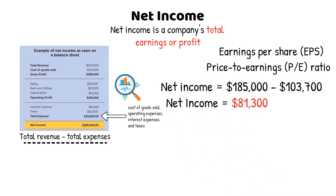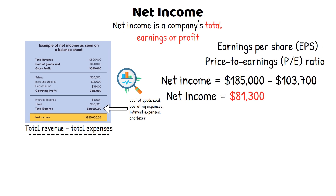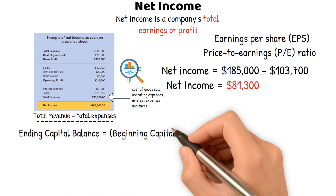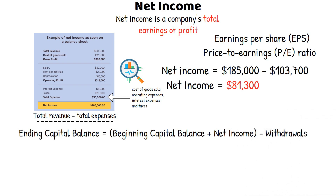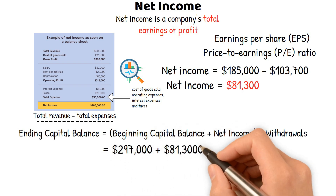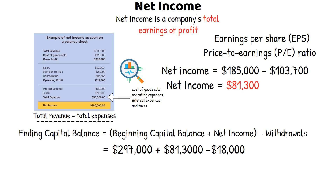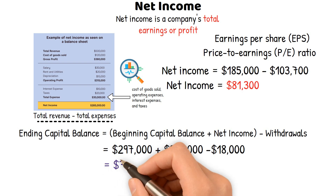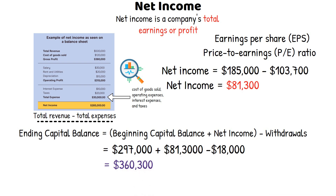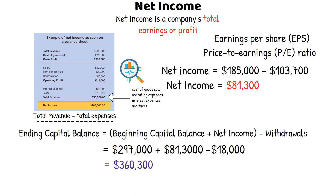Next, we need to calculate the owner's ending capital balance after taking into account the net income and any withdrawals. The formula is: ending capital balance equals beginning capital balance plus net income minus withdrawals. For example, ending capital balance equals $297,000 plus $81,300 minus $18,000, making the ending capital balance $360,300. Therefore, the net income for the year is $81,300.